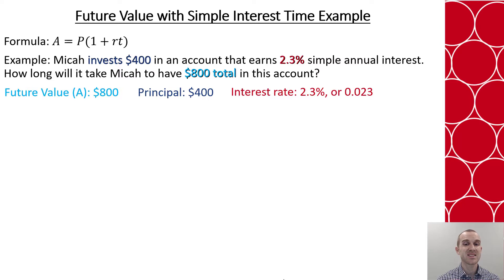We know the interest rate is 2.3%. What we don't know is the time. We do know that it's an annual interest, but they write how long. So that tells us time is the unknown, and we're going to calculate it in years.